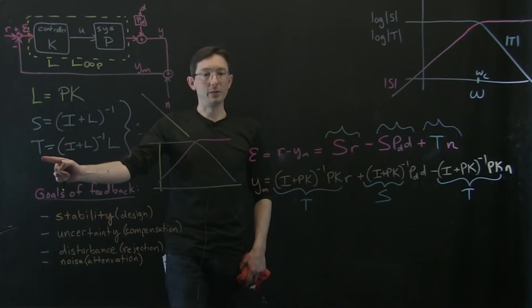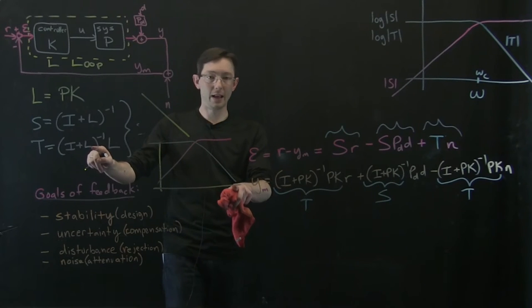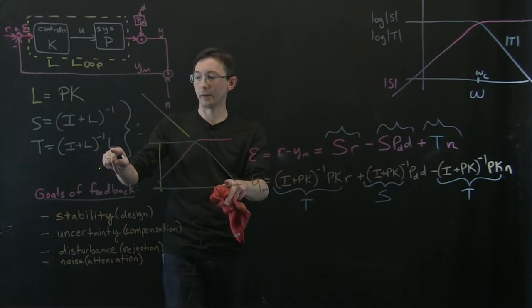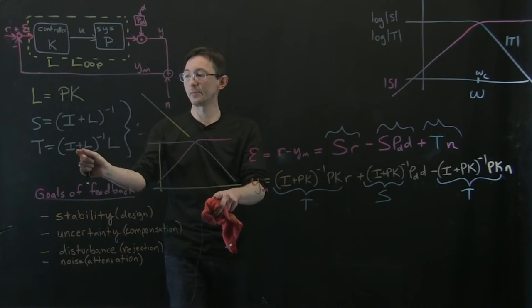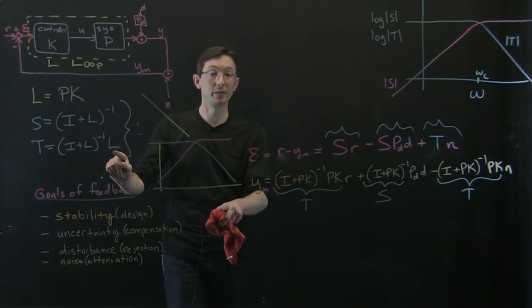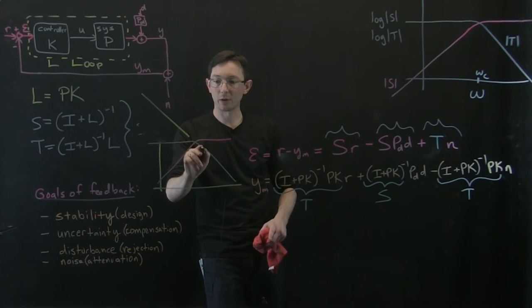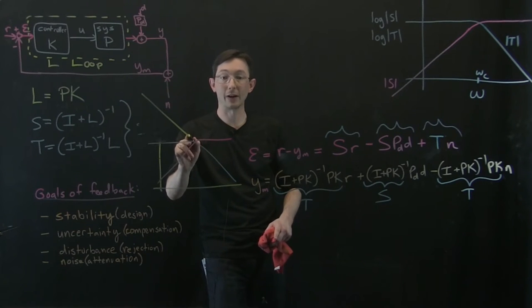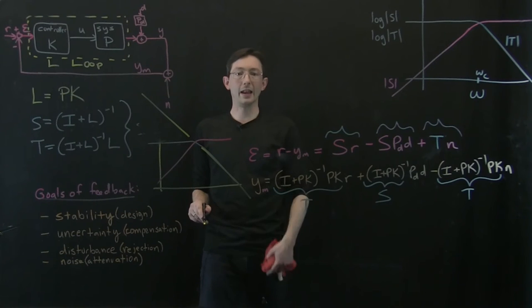For high frequencies, I want T to be really, really small. And so at high frequencies, what I want is L to be really, really small. So really, really small plus identity is just identity. And identity times really, really small is really, really small. So what I want now is for L, my loop transfer function to be small at high frequencies.